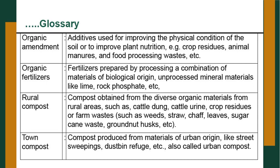Nutrient budget deals with the quantitative estimation of major nutrients provided to the soil, retained by the soil after harvest, and taken away by the plant. Organic amendment refers to additives used for improving the physical condition of soil or to improve plant nutrition — for example, crop residues, animal manures, and food processing waste. Organic fertilizers are prepared by processing a combination of materials of biological origin or unprocessed mineral materials like lime and rock phosphate.